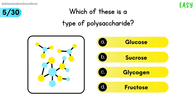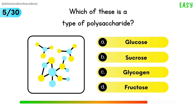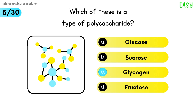Which of these is a type of polysaccharide? Glycogen is the one which is a polysaccharide.